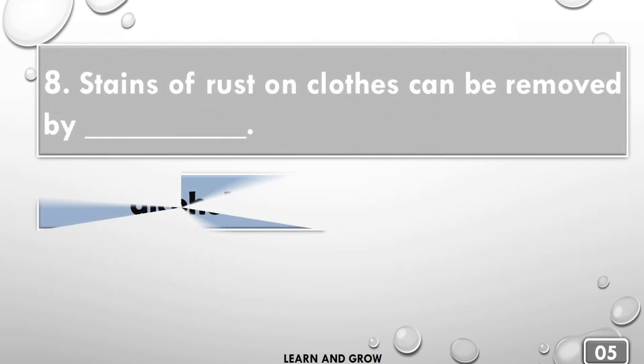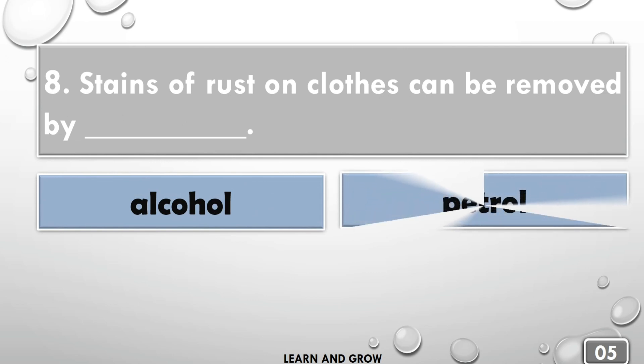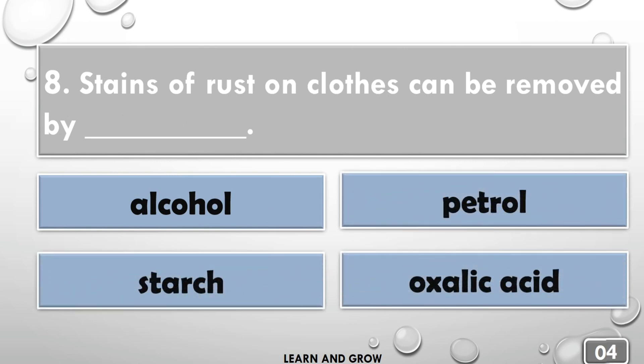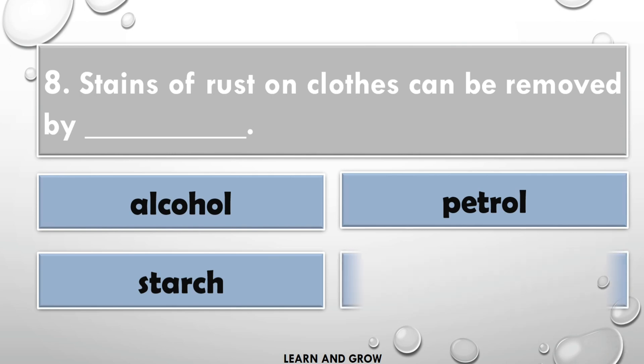Stains of rust on clothes can be removed by... The right answer is oxalic acid.